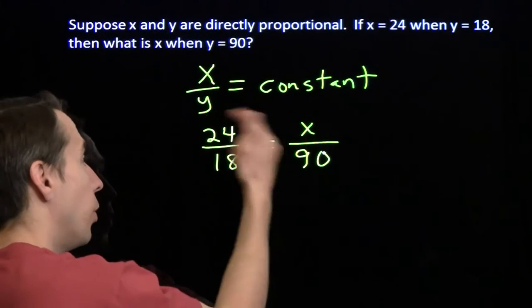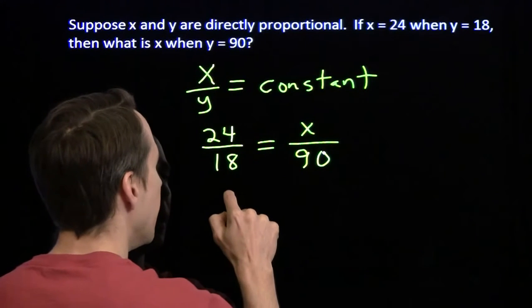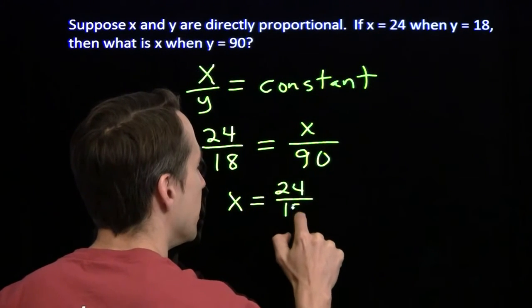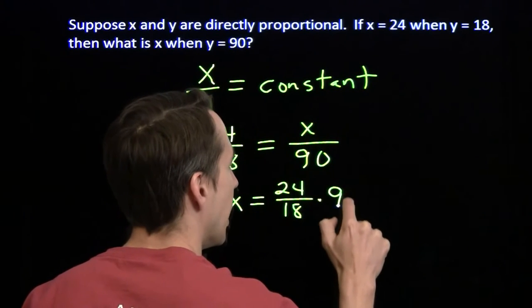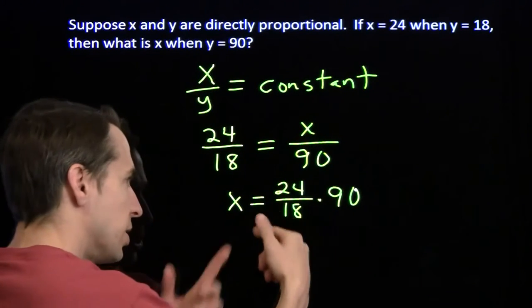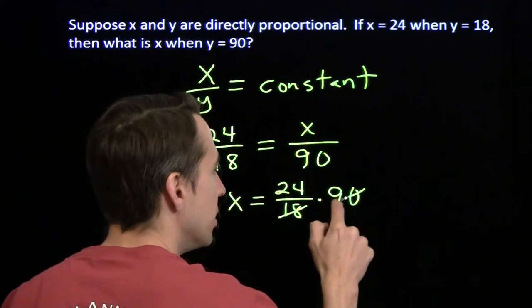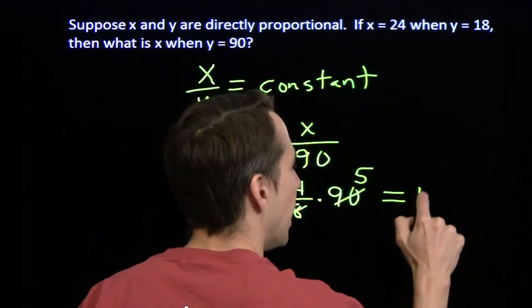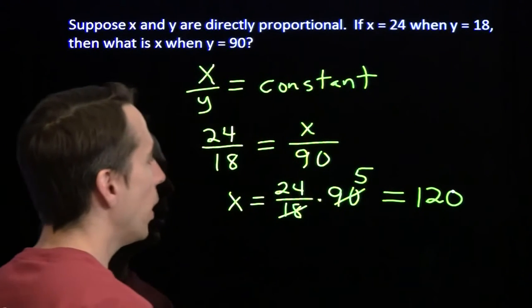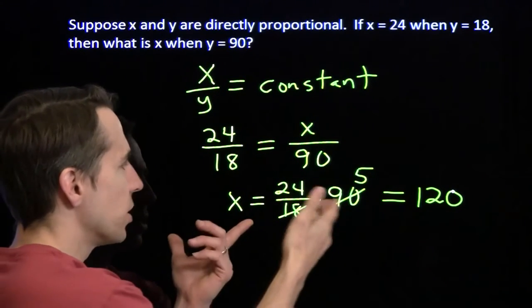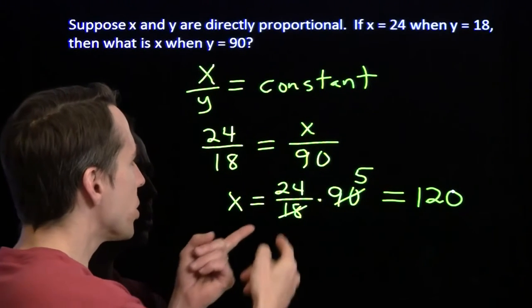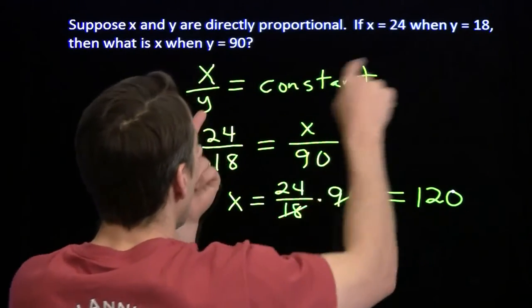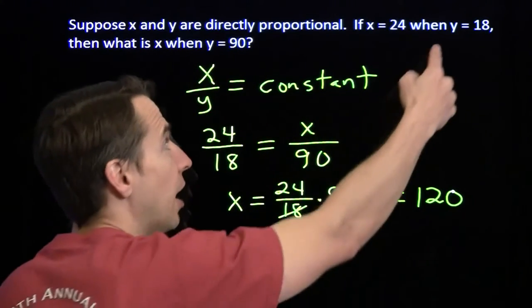This is an equation we know how to solve. We'll multiply both sides by 90, and we'll get x is 24 over 18 times 90. Now we see a common factor here — 18 goes into 90 five times — and we get x is 24 times 5, which is 120. This gives us another way to look at proportion: going from 18 to 90, we're multiplying by 5 as well.